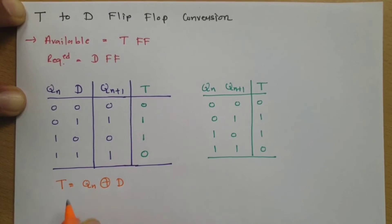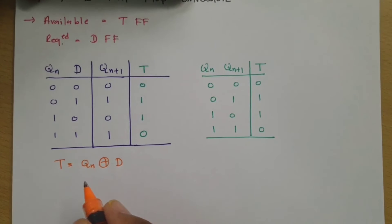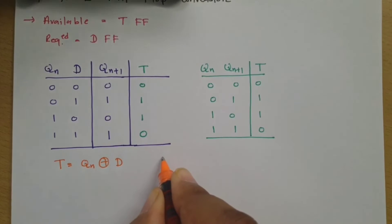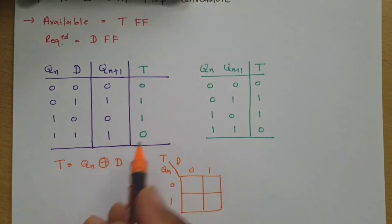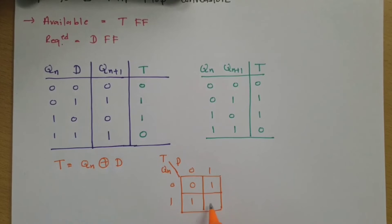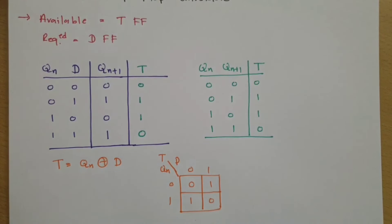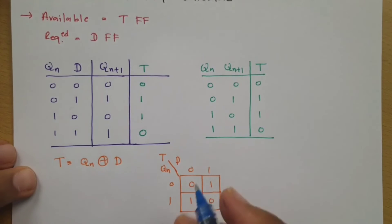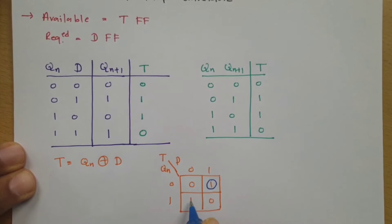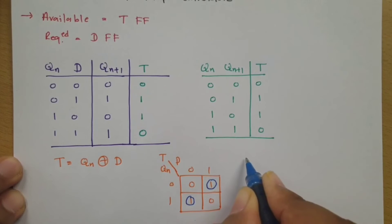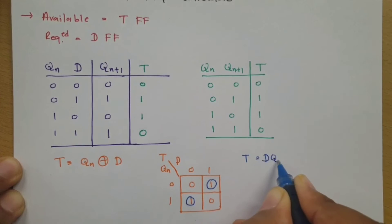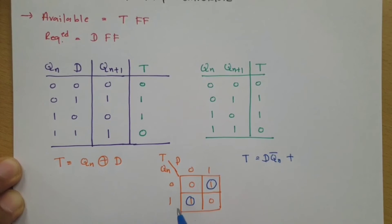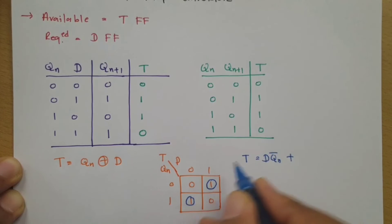We can also verify this by solving the K-map. With T mapped against Qn and D giving values 0, 1, 1, 0, we form two groups: one group gives D·Qn-bar, and the other group gives Qn·D-bar. So T equals D·Qn-bar plus Qn·D-bar, which is the XOR operation, confirming T equals Qn XOR D.